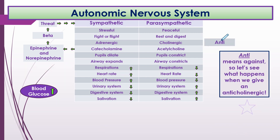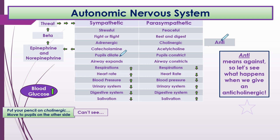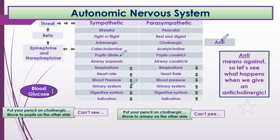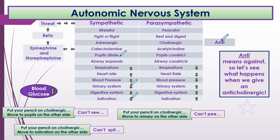We know anti means against, so let's see what happens when we give an anticholinergic. Put your pencil on cholinergic and move to pupils on the other side — our pupils dilate, so it can be hard for the patient to see and their vision becomes blurry. Move to urinary — the urinary system slows down, making it more difficult for them to pee. Move to salivation — that's why they get a dry mouth; they can't spit. So they can't see, they can't pee, they can't spit.